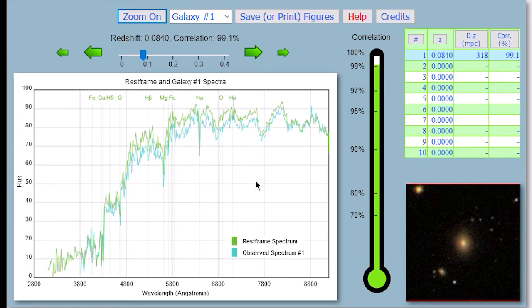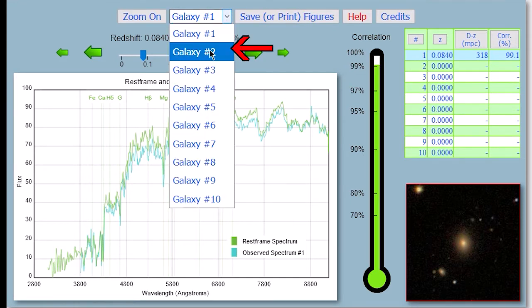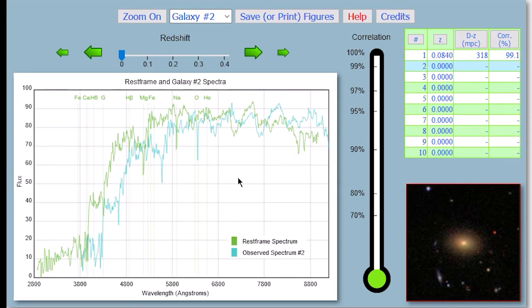And you're going to want to match the correlation for 10 different galaxies. So up here at the top, there's a little drop down menu. You can go from Galaxy 1 to Galaxy 2. And now we're going to fill in this one. So again, we're going to shift the spectrum back and forth, and the data will be filled into this data table up here.